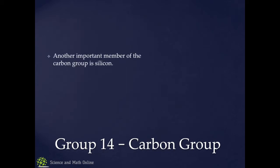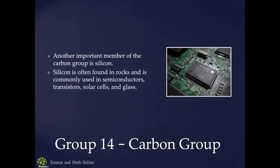Another important member of this group is silicon. Silicon is found in rocks — silicates, sand, and therefore glass. Glass is primarily silicon dioxide. Silicon is also used in semiconductors, transistors, microchips, and solar cells. A lot of our electronics have silicon in them.